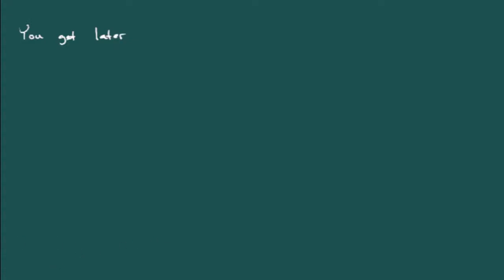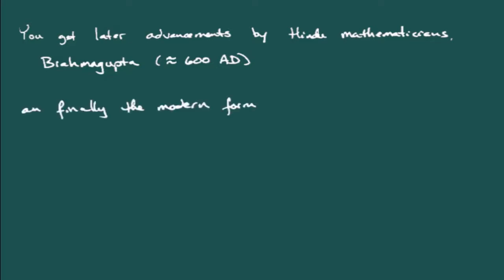Now, later on, we see some later advancements. Going forward a lot now, we see some later advancements by a Hindu mathematician, in particular, Brahmagupta, around 600 AD. And then, we get more of the more modern formulation of the quadratic formula, and actually a proof as to why it works, again, using Completing the Square by Al-Kharizmi, about 800 AD.